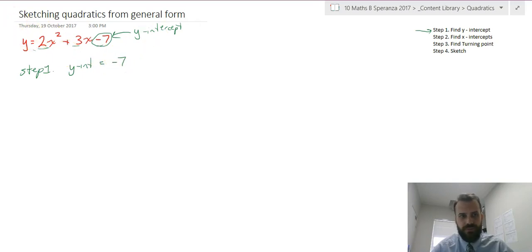Let's move on to step two. Step two is finding the x-intercepts. In order to find the x-intercepts, it doesn't matter what sort of question you're doing, the way to do it is always the same. Find x-intercept, let y equal 0.